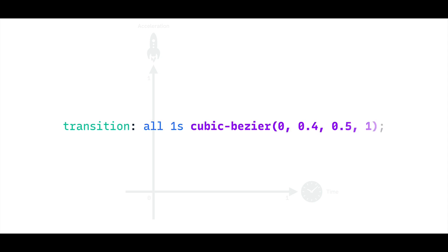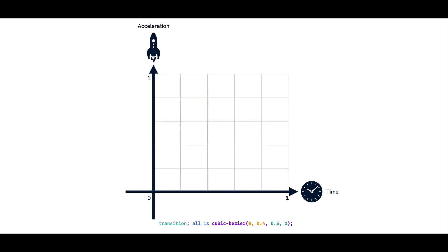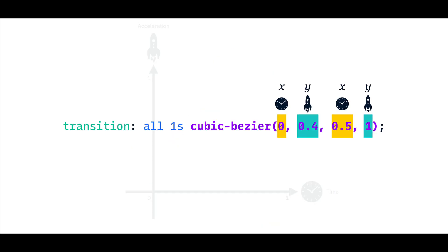So, let's take this Cubic Bezier with 0, 0.4, 0.5 and 1. Remember, these are x-y coordinates of the handles on our graph, which in turn determine the shape that gets drawn between them. And then this shape determines the motion of the curve. We can speed up, slow down, and do everything else in between.